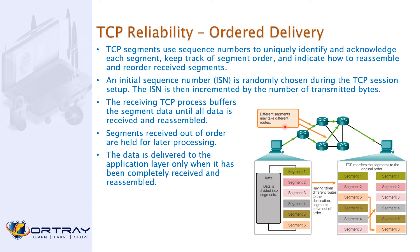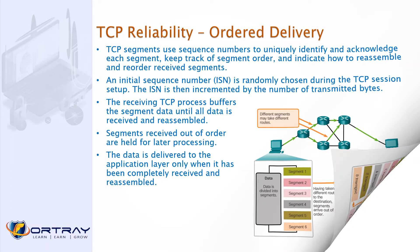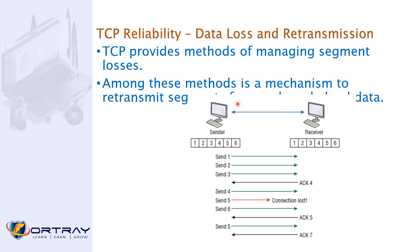The receiving TCP process buffers the segment data until all the data is received and reassembled. The data is delivered to the application layer only when it has been completely received and reassembled. Different segments may take different routes, but because of sequence numbers and acknowledgements, TCP provides you reliability as compared to UDP.